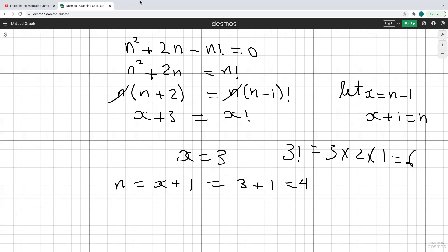Now, you could go ahead and try to sub in the 4 in here and see if that works. So we sub in 4 into the original question. So we have 4 squared plus 2 times 4 minus 4 factorial. And that should equal 0.